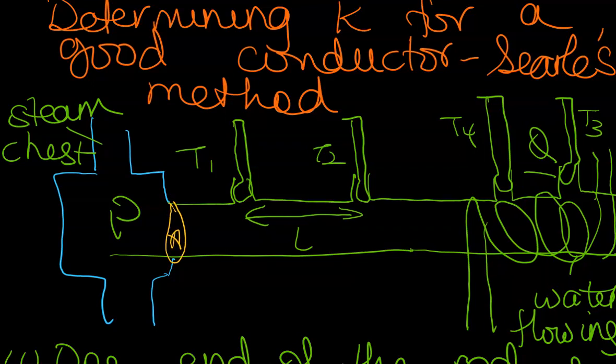Now one end, we are going to label that end P, you are going to place in a steam chest. And your steam chest obviously is to supply steam to heat it. The other end Q, you are going to wrap a copper tubing, and you are going to let water flow in that copper tubing.